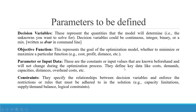Parameters define key data like costs, demands, capacities, distances, and overhead costs. The fourth parameter is constraints — they specify the relationships between decision variables and enforce the restrictions or rules that must be adhered to in the solution. Examples include capacity limitations, supply-demand balance, and logical constraints.